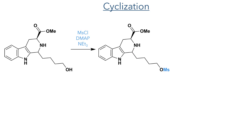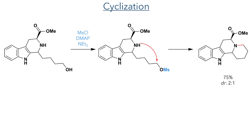This mixture of isomers was not separated and was mesylated using mesyl chloride, DMAP and triethylamine. With this leaving group now installed, the secondary amine acted as a nucleophile and a 6-exo-trig cyclisation occurred, forming a new 6-membered ring in a 75% yield.